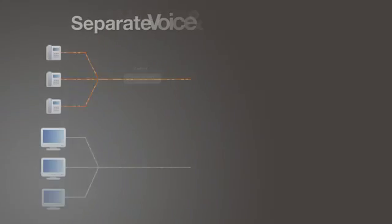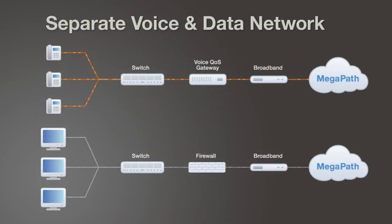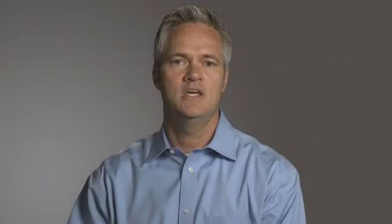The second option is a separation of your voice and data traffic. This can be achieved through a physical separation with separate Ethernet drops and switch hardware for phones and data, or it could also be a logical separation, such as a virtual LAN. If you are pushing lots of data across your network or deploying a large number of phones, this will help ensure the best possible quality for your new Megapath phone system.